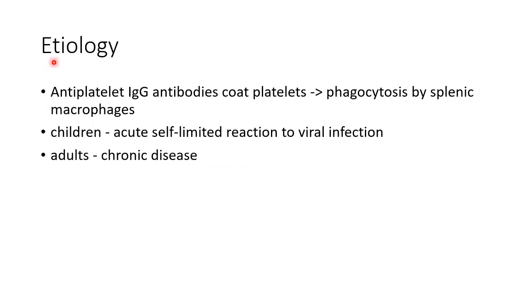In ITP there are antiplatelet immunoglobulin G antibodies which coat the platelets, leading to phagocytosis of platelets by splenic macrophages. In children it occurs as an acute self-limited reaction to viral infection, while in adults it can occur as a chronic disease.